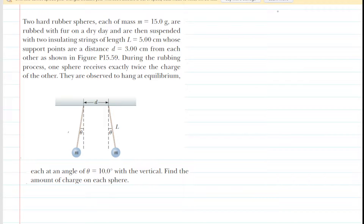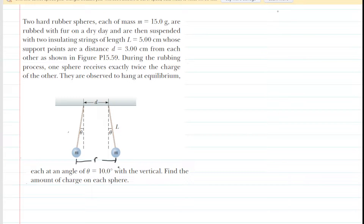If you haven't done so yet, please pause the video and re-read the problem before listening on. Our first step in solving this problem is to find the distance between the two spheres. We're going to call that overall distance R between the two spheres, but the problem does not directly give us that distance — it only gives us this distance here, which the problem has marked as D.